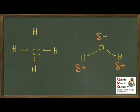Some molecules, such as the methane shown on the left, do not have permanent partial charges. Other molecules, such as the water on the right, do have these permanent partial charges, shown here as the delta-minus on the oxygen and the delta-pluses on the hydrogen. Electronegativity allows us to predict and explain the presence or absence of these partial charges.